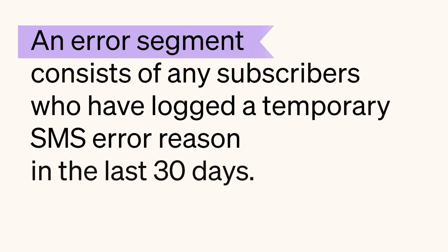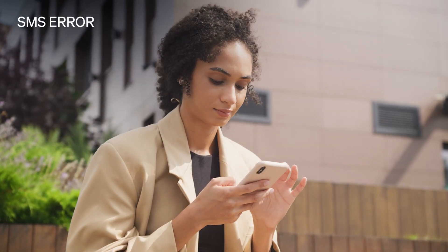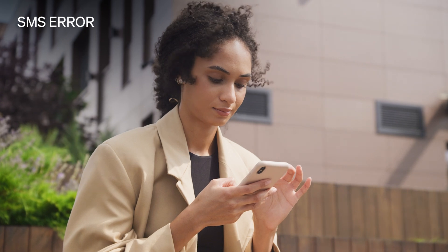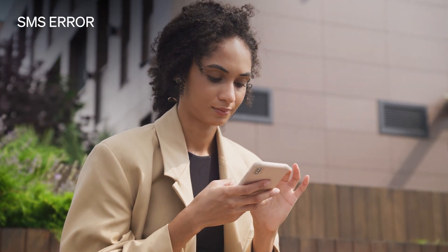An error segment consists of any subscribers who have logged a temporary SMS error reason in the last 30 days. Once you build this segment, you can exclude it from all of your campaign sends. Minimizing the amount of failed SMS messages helps you maintain a high deliverability rate and allows you to invest in messaging the subscribers most likely to purchase from your brand.